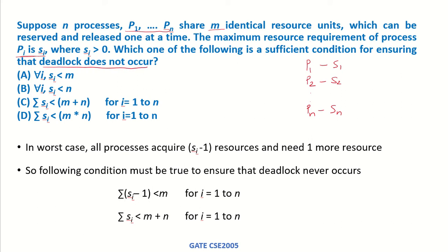In the worst case, all processes require one less resource than their maximum requirement. That means if the maximum requirement of P1 is S1, suppose it is acquiring S1 minus 1. P2 has acquired S2 minus 1, Pn has acquired Sn minus 1 resources. So each of these processes needs one more resource to complete their execution.